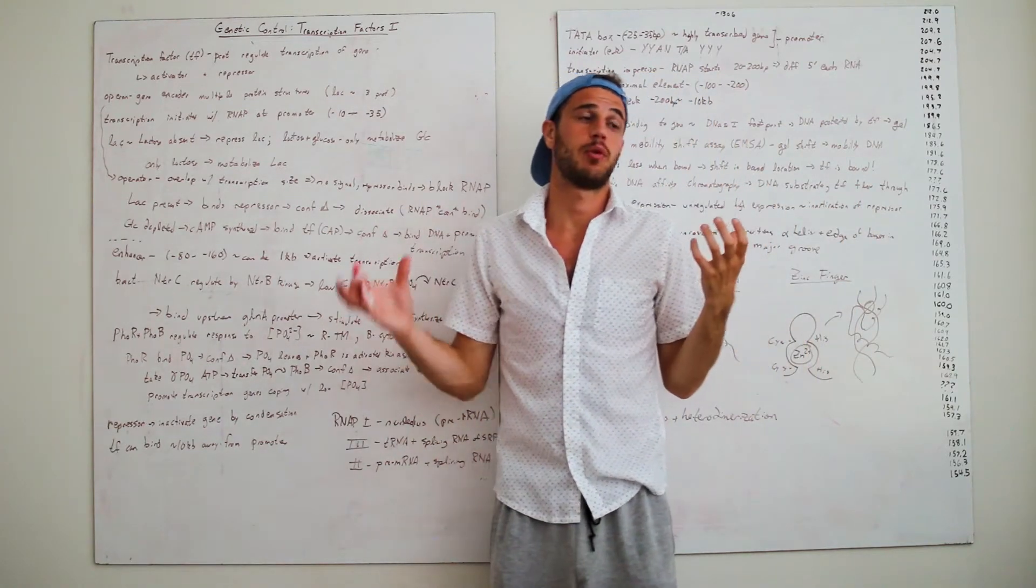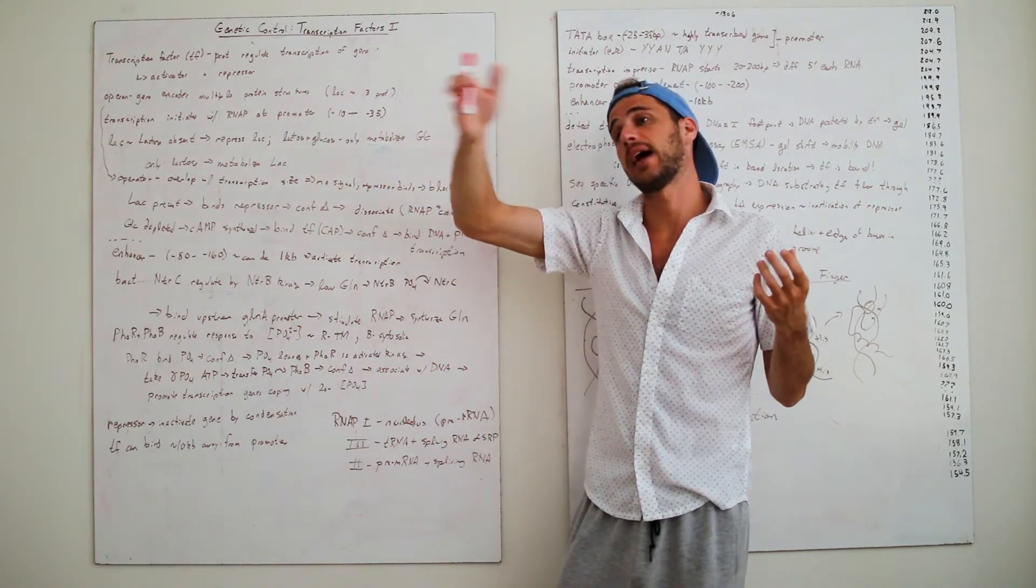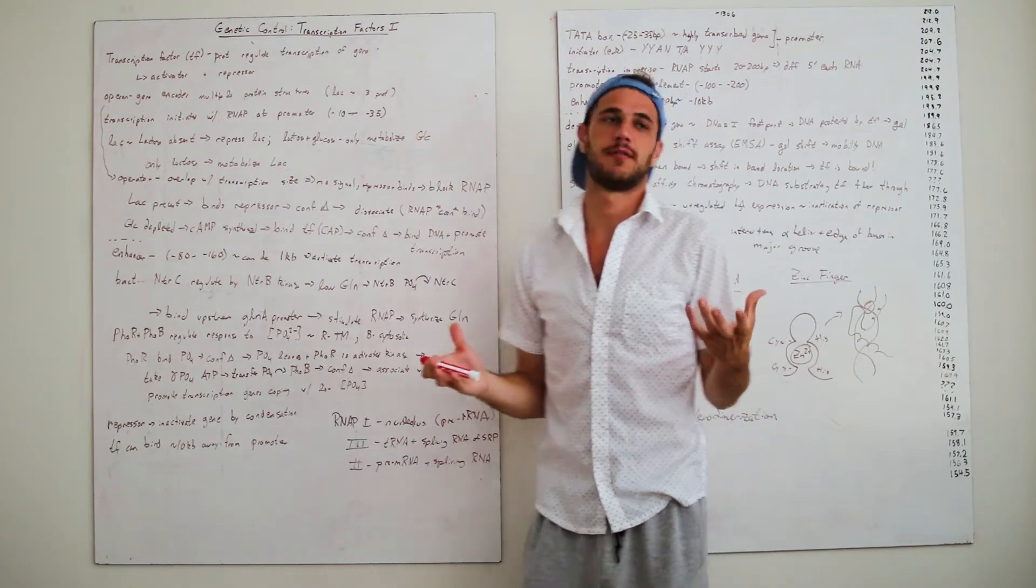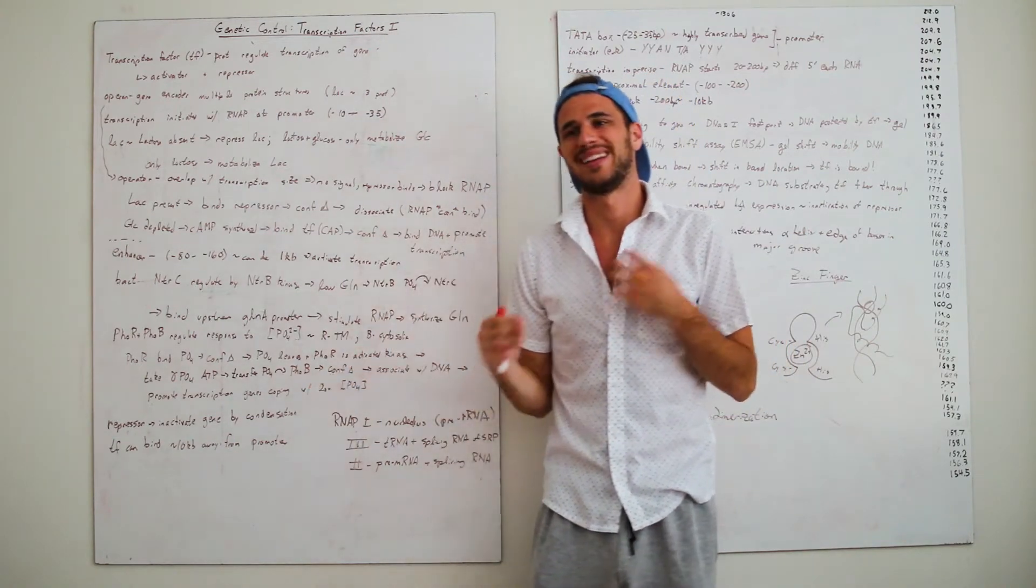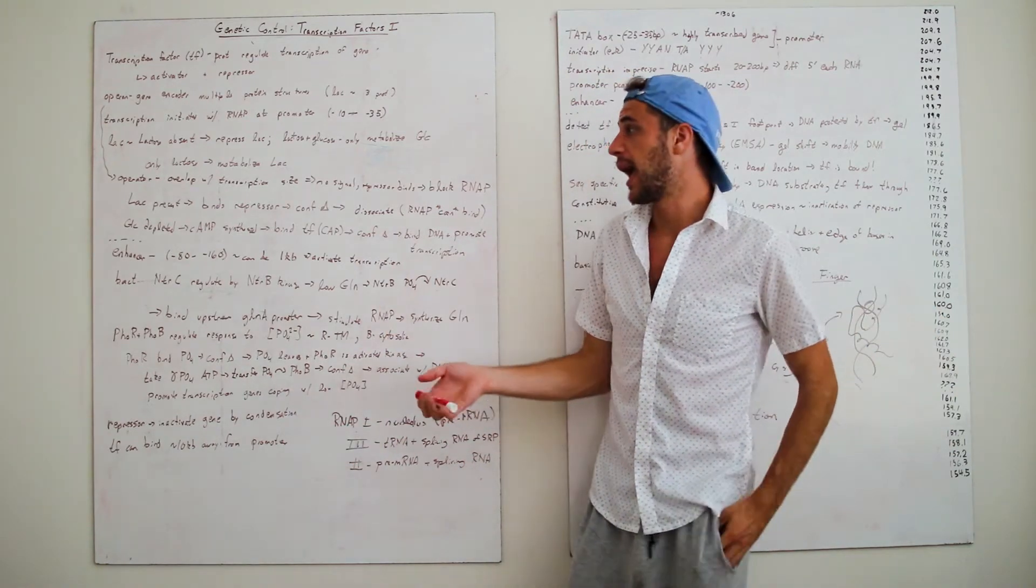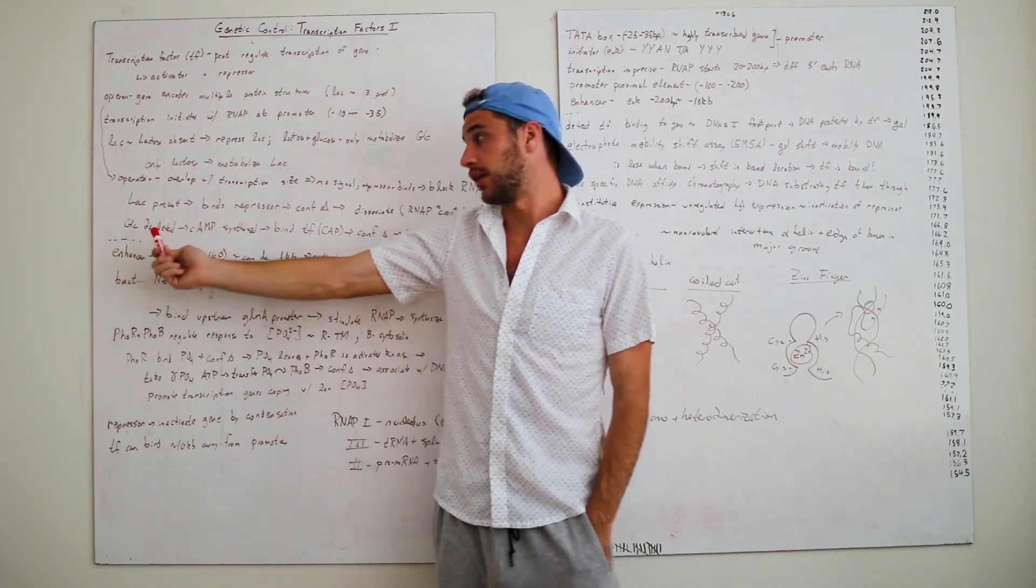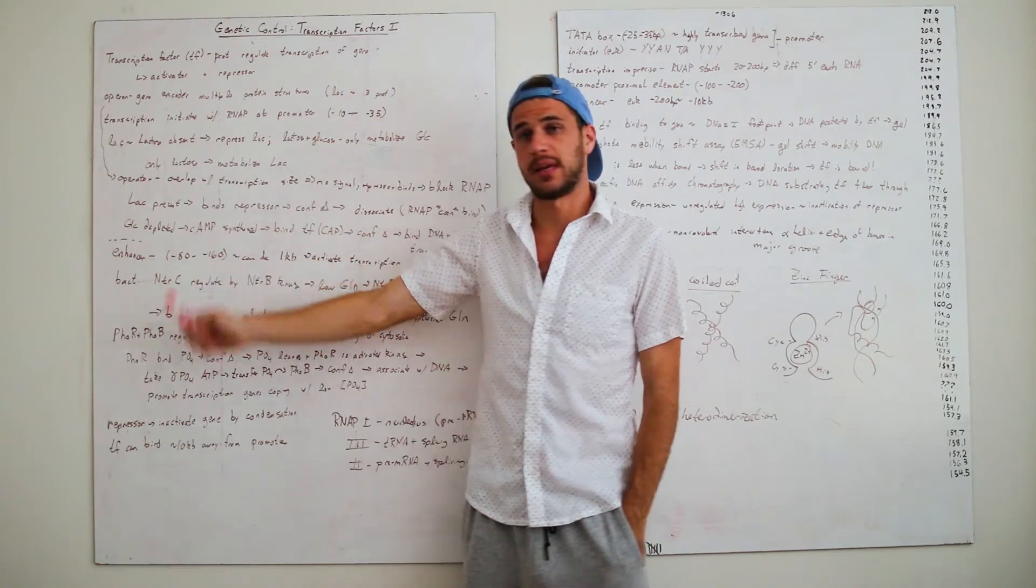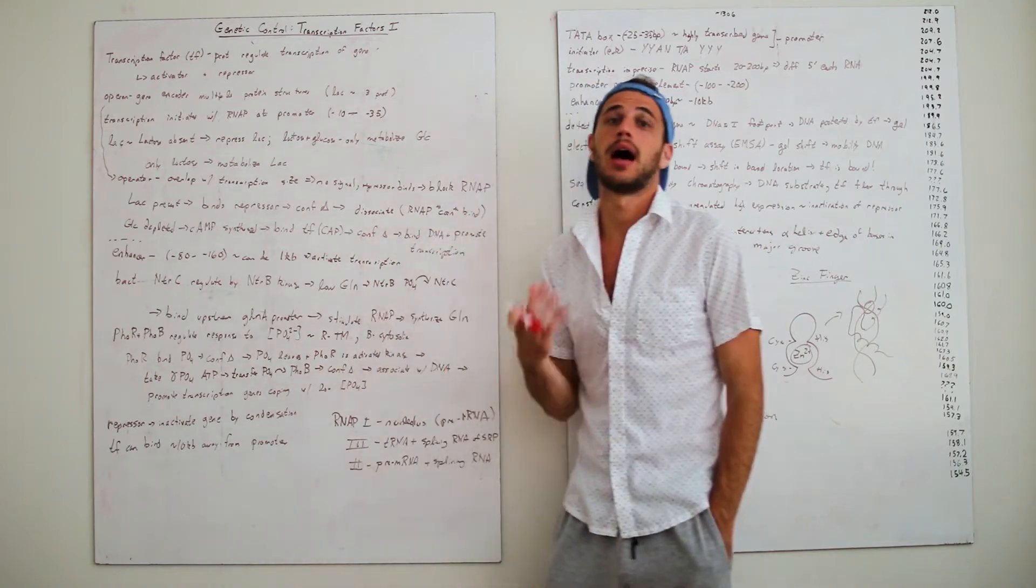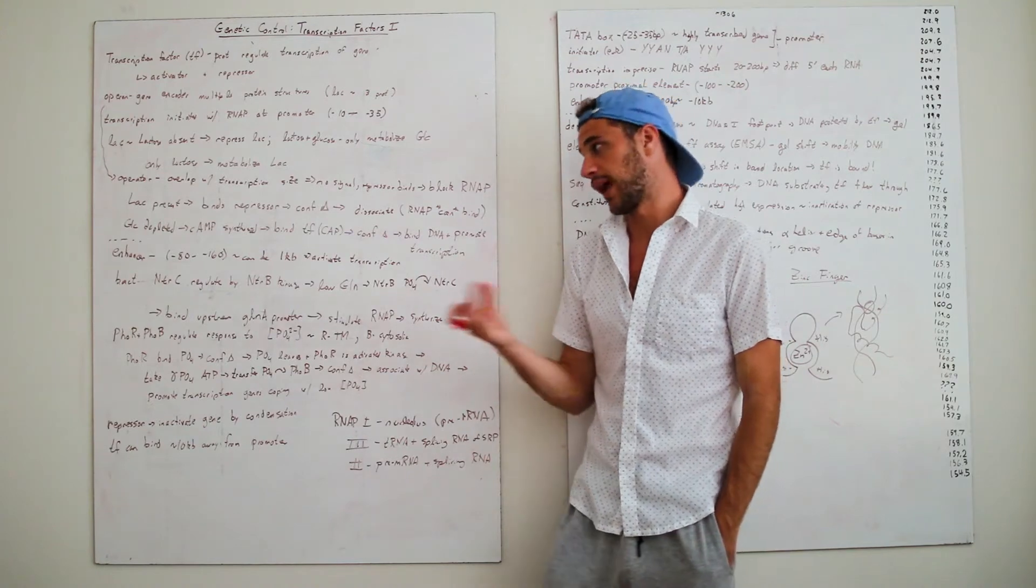Now, when there is lactose present, the lactose will bind to the repressor, it will make a conformational change in that repressor, so it leaves the DNA, so RNA polymerase can bind now. When lactose is present, the transcription factor leaves. And so the RNA polymerase can actually go on to DNA and start transcribing. But that's not usually what happens. It might do here or there, but it's not really going to happen that much, if at all.